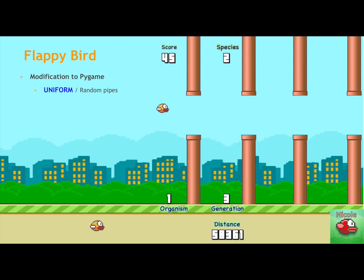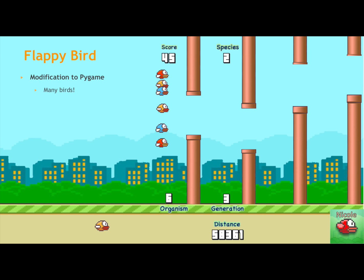And we modified Flappy Bird to have either uniform or random pipes, as shown here, and our final modification was that we added many birds, which represented different organisms in a species, and Brennan will talk about that more right now.